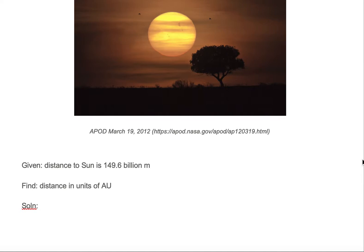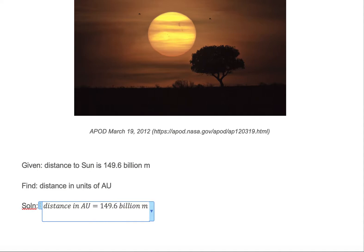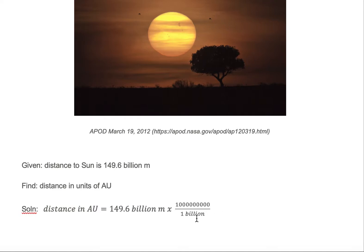How do we go about doing this? We're given that the distance to the sun is 149.6 billion meters, and we want to find the distance to the sun in units of astronomical units, or AU for short. So we need to start with what we're given. The first thing we need to do is to convert out of the word billion. Billion means one with nine zeros, so we divide by one billion.